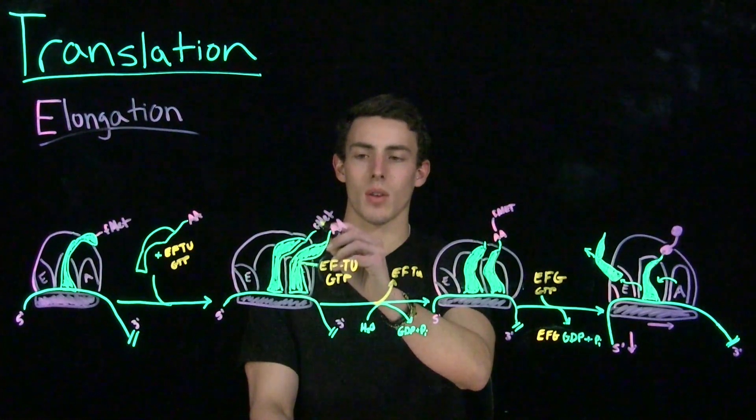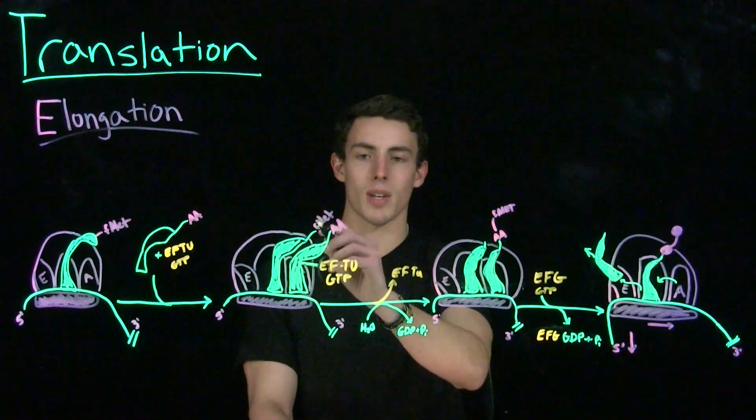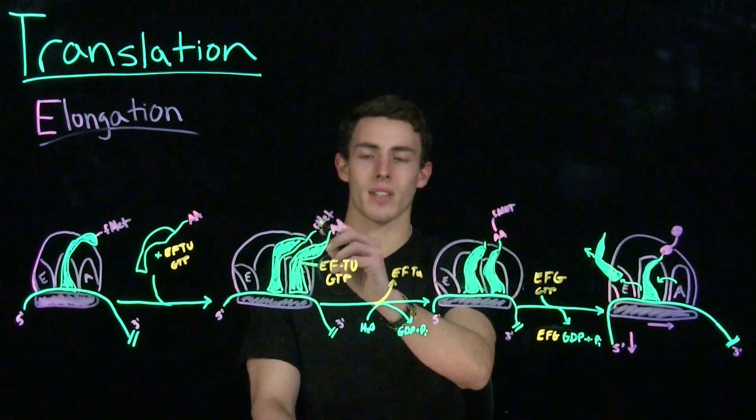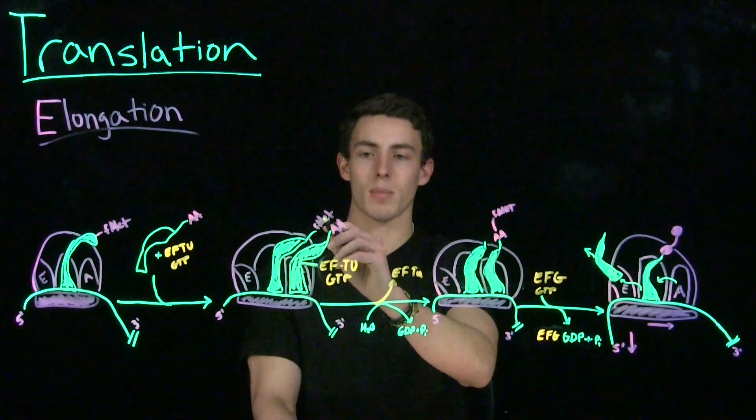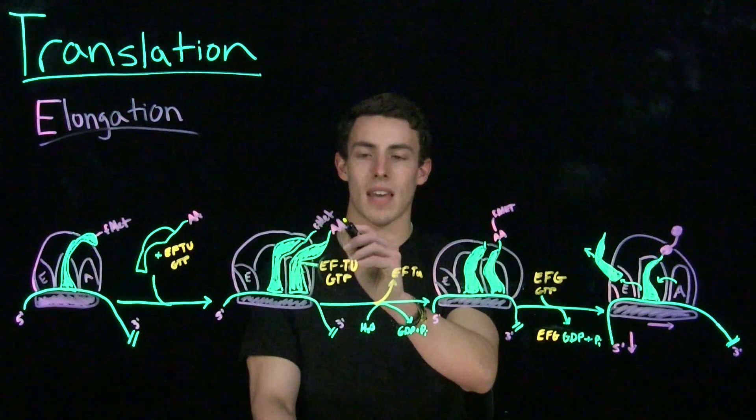By attacking this carbonyl carbon, we force this group to leave and we form a bond between the amino terminus or the N-terminus of this amino acid and the C-terminus of this amino acid or polypeptide later in translation. In non-chemical terms, what this means is that the amino acid or polypeptide from the P site is transferred onto the amino acid in the A site.